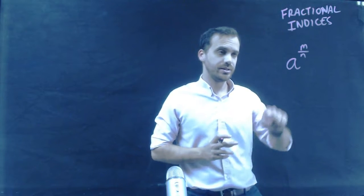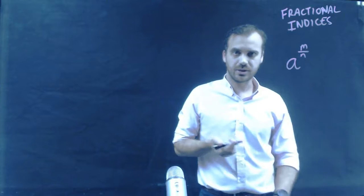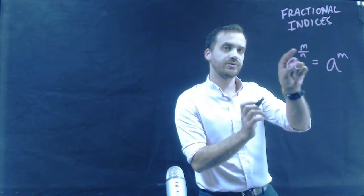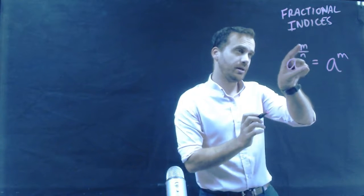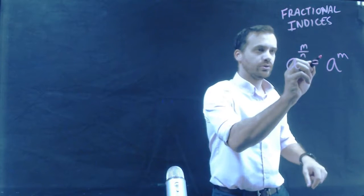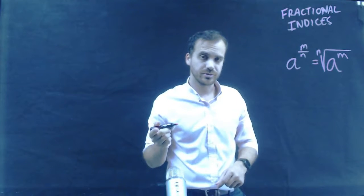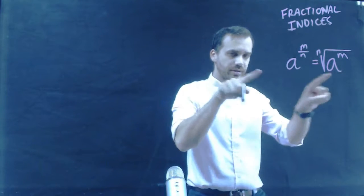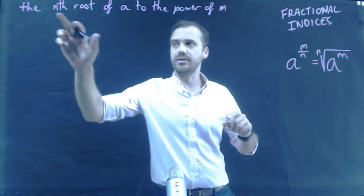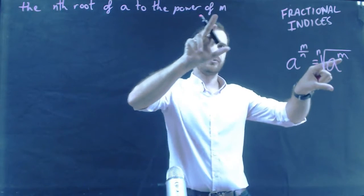Here's a fractional indice: a to the power of m over n. That's going to be equal to a to the power of m — we've taken the numerator, the top number — with the nth root. So if I write this in words, it's going to look like this: the nth root of a to the power of m.